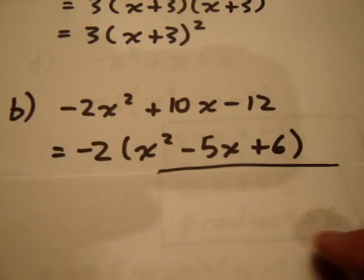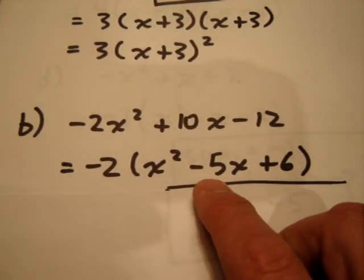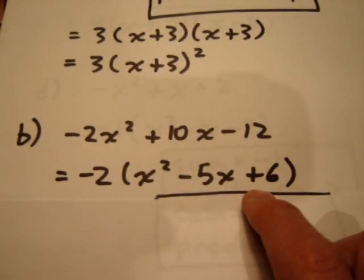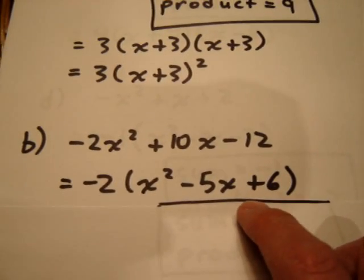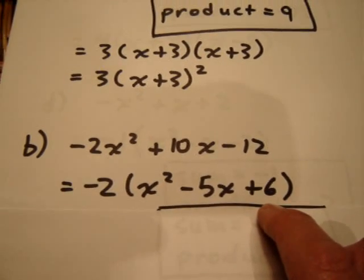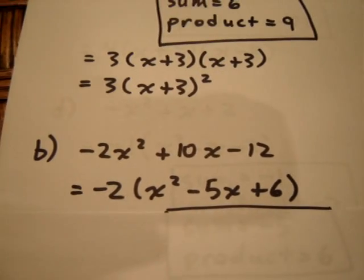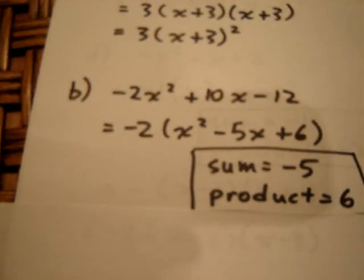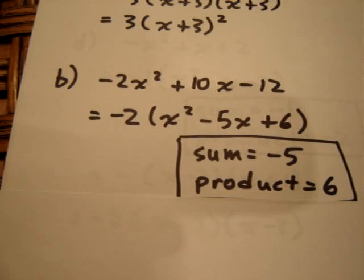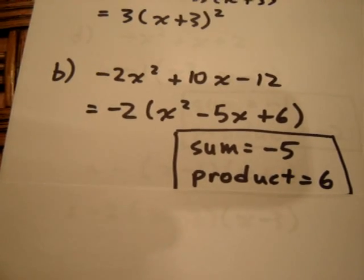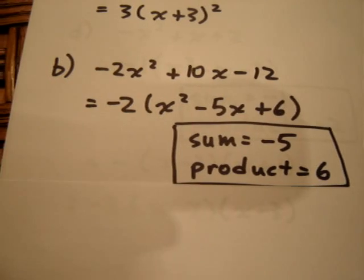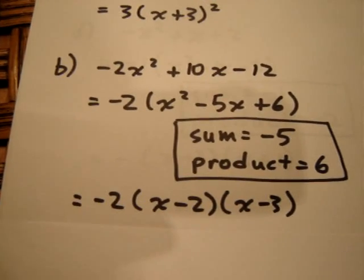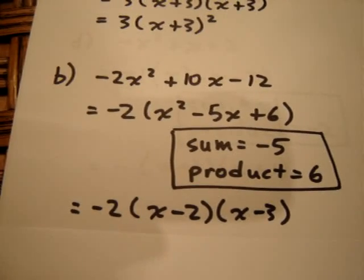And we now want two numbers that add up to negative 5 and multiply to positive 6. Well, we're going to look for two negative numbers because two negative numbers have the capacity to multiply to a positive but add to a negative. Well, those two numbers with a sum of negative 5 and a product of 6 are negative 2 and negative 3. But don't forget, we carry along that negative 2 in front of the bracket as a passenger, and we get our final answer, -2(x - 2)(x - 3).